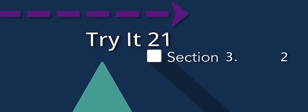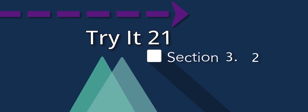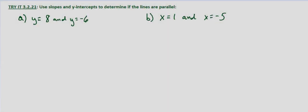So we're asked in this problem to determine if lines are parallel using their slopes and y-intercepts again, but in this case we're looking at vertical and horizontal lines.